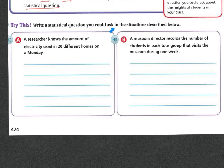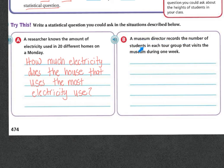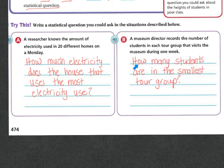Now write statistical questions that you could ask in the situations described below. Situation A: a researcher knows the amount of electricity used in 20 different homes on Monday. One question might be, 'How much electricity does the house that uses the most electricity use?' — because you're looking for specific data in a set that varies. Situation B: a museum director records the number of students in each tour group that visits the museum during one week. One question could be, 'How many students are in the smallest tour group?'